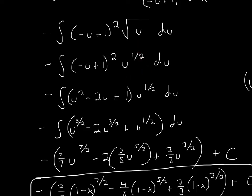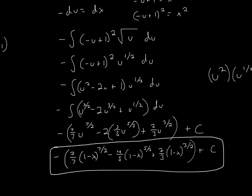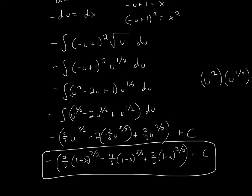Now we can expand (negative u plus 1) squared. We multiply negative u plus 1 times negative u plus 1. Negative u times negative u is u squared. Then negative u times 1 plus 1 times negative u gives negative 2u. And 1 times 1 is 1. So we get u squared minus 2u plus 1. After that, we multiply all of these terms by u to the 1 half power.